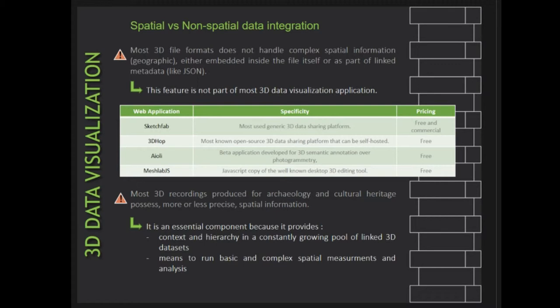We must also acknowledge that most 3D recordings for cultural heritage and archaeology possess spatial information — very accurate GPS data for LiDAR, or EXIF data with basic GPS coordinates from cameras or phones. Keeping track of this spatial component has an obvious added value: it provides invaluable context and hierarchy in a constantly growing pool of linked 3D data, clearly defines units and scale, and enables us to run basic or complex spatial measurements and analysis.